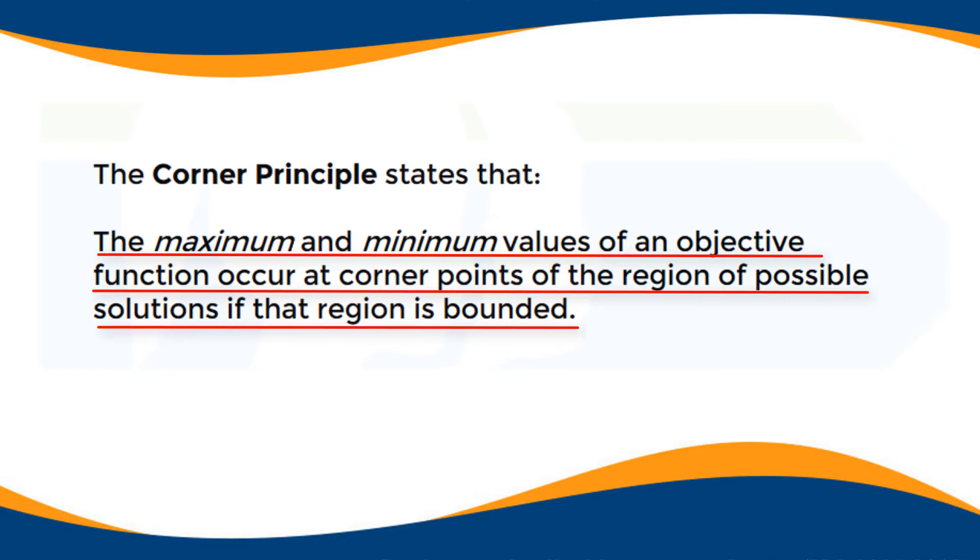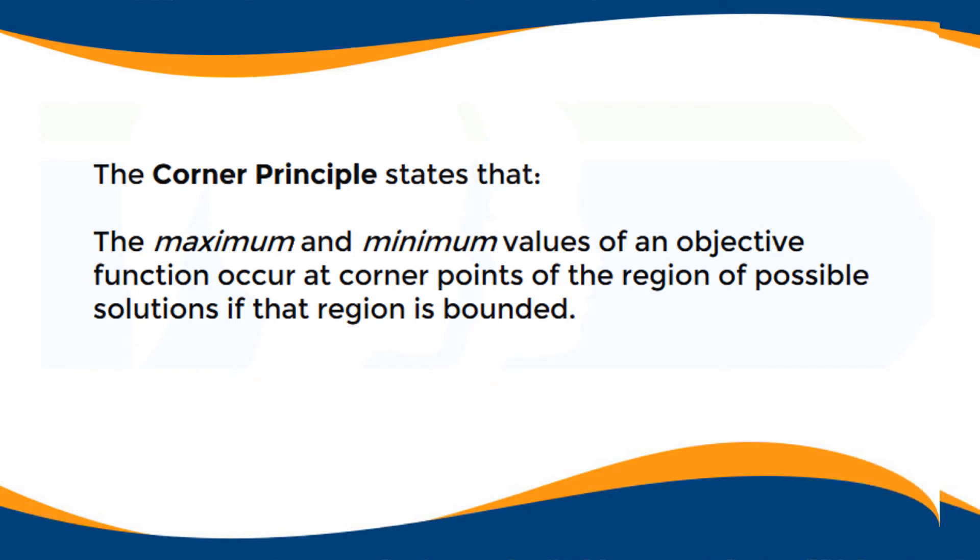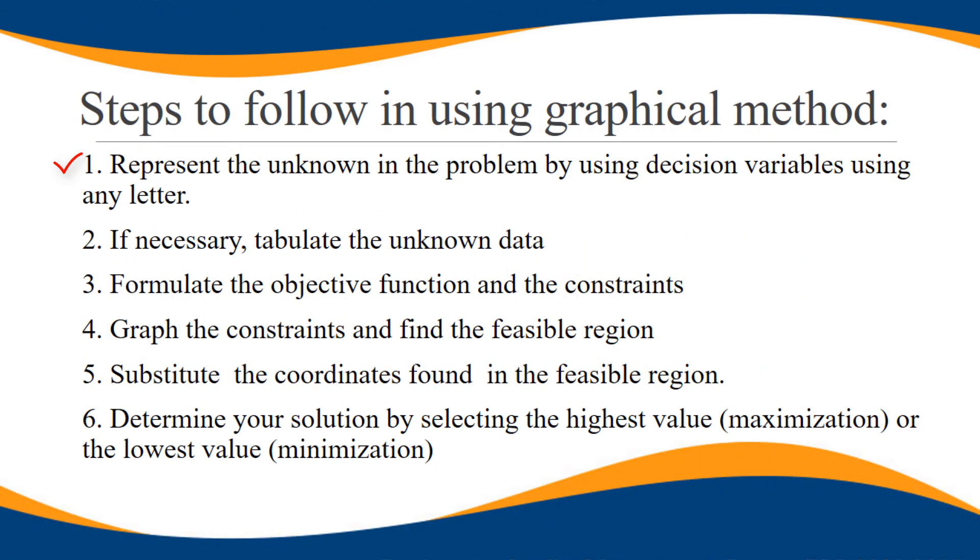Then there are steps to follow in using graphical method in linear programming. Number one is to represent the unknown in the problem by using decision variables using any letter. Usually we use X and Y. If necessary, tabulate the unknown data.